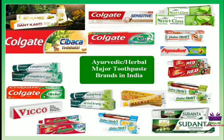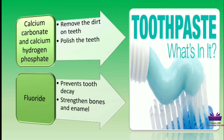Today, a variety of toothpastes and tooth powders are used for this purpose. The principal ingredients of a toothpaste — calcium carbonate and calcium hydrogen phosphate — remove dirt and polish the teeth. A certain proportion of fluoride in the toothpaste helps prevent tooth decay. Fluoride is essential for the strengthening of bones and the enamel covering of teeth.